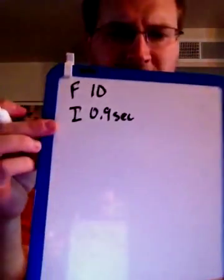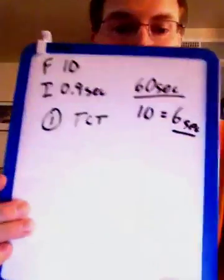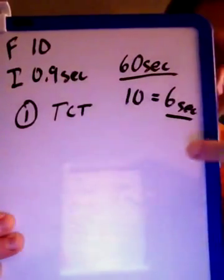I'm going to give a rate of 10 and an I-time of 0.9 seconds. Let's break this into a three-step process. Step one is to calculate the total cycle time: 60 seconds divided by 10 gives me 6 seconds for total cycle time. Hopefully everybody can see that — 60 divided by 10, 6-second total cycle time. That's step one.